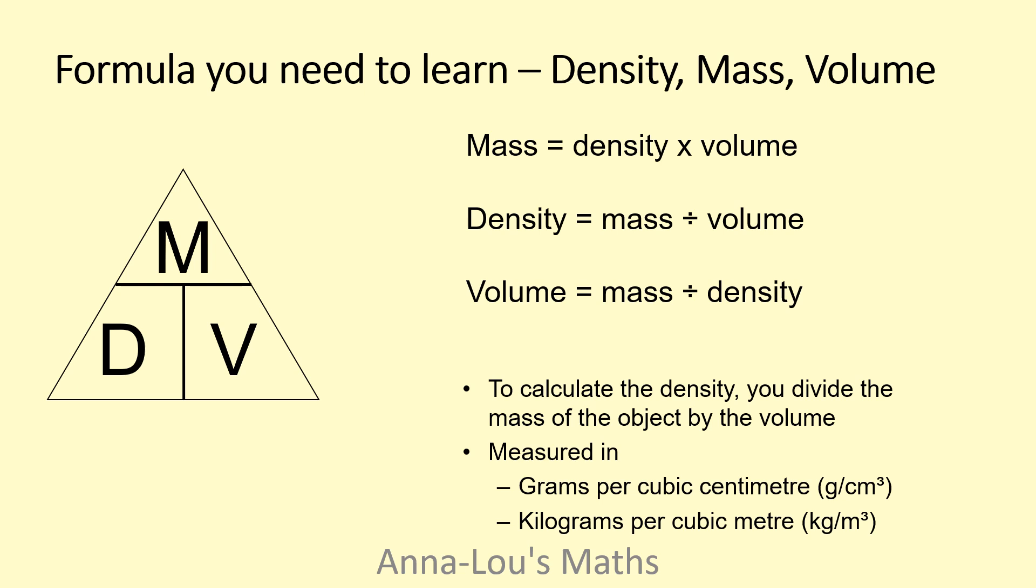So we've got our density, mass, volume triangle—DMV. And this way we are learning three formulas by learning one triangle. Because don't forget, things that are next to each other, like this D and this V, mean to multiply. Over each other is to divide. So you're covering up the one that you want.